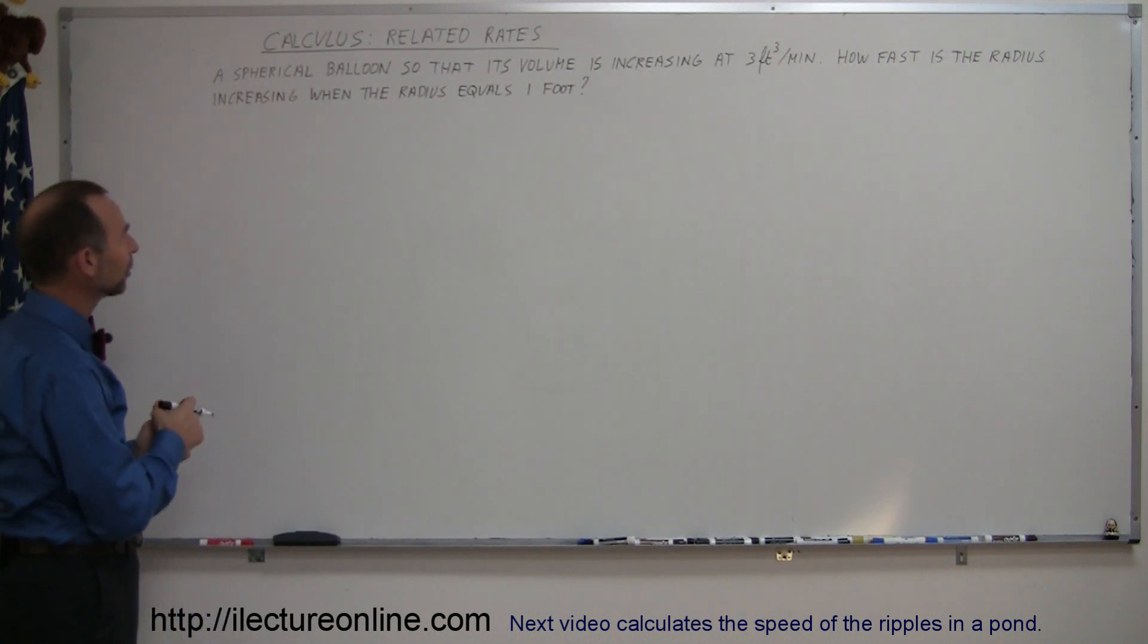It says here that we have a spherical balloon so that its volume is increasing at a constant 3 cubic feet per minute. How fast is the radius increasing when the radius equals 1 foot?